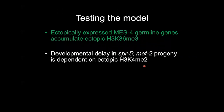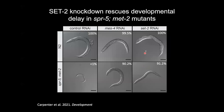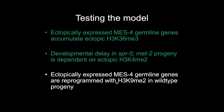Our model also suggests that it's the ectopic K4 that allows K36 to be maintained by MES4. So if we reduce K4 levels, could we rescue the phenotype? We knocked down or knocked out the methyltransferase for H3K4 methylation, SET2. When we knocked down SET2, we were able to rescue the developmental delay seen in SPR5 progeny to a similar level as MES4 knockdown. This confirms that H3K4 is required for this phenotype.